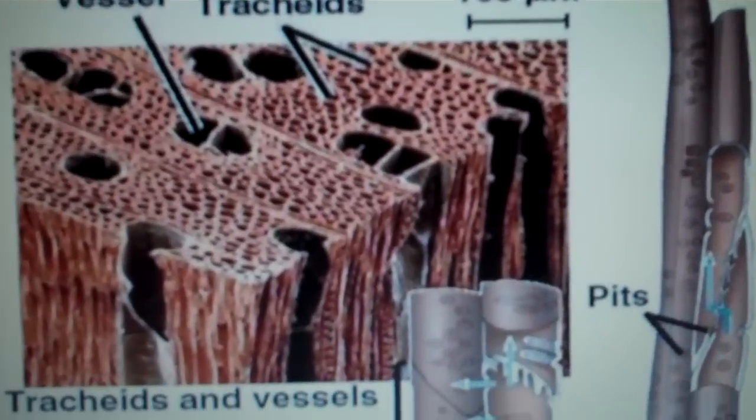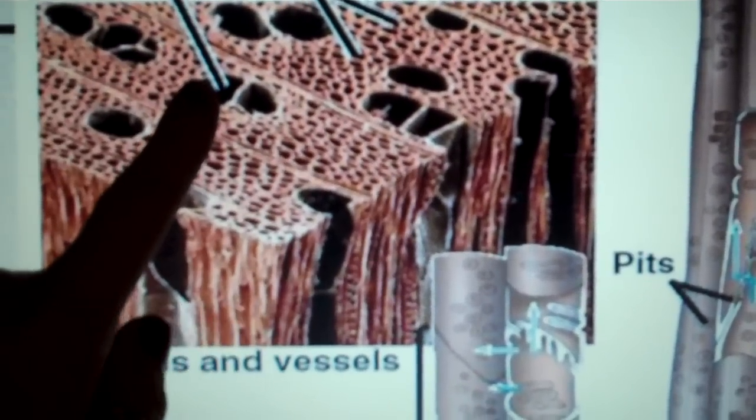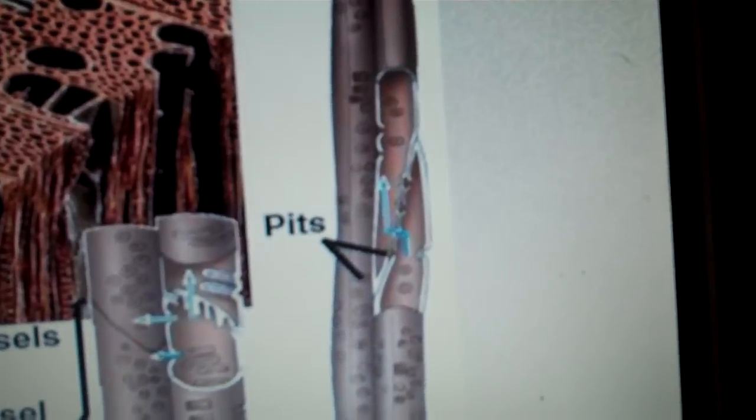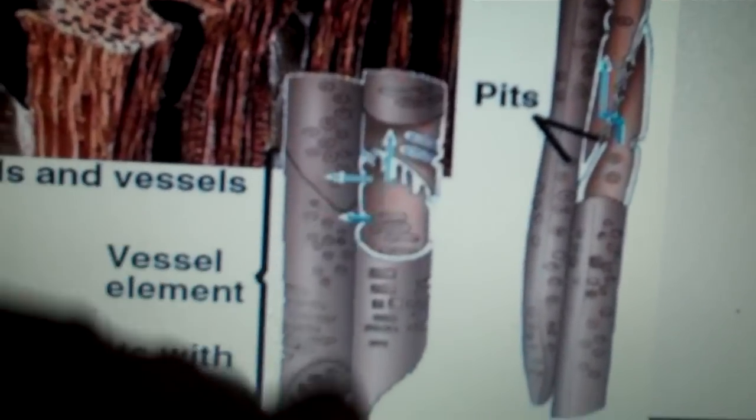We look at some pictures. Here's a real plant. We have the tracheids, which are smaller, and then we have the vessel elements. The tracheids, the water passes through pits, which are these little holes in them, and the vessel elements go right from end to end.